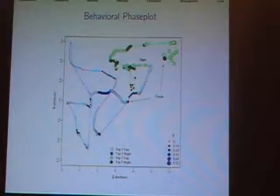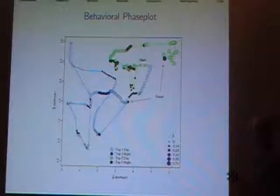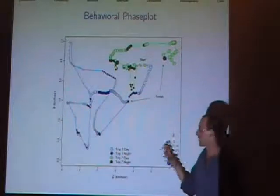So just a couple more points. There are models out there that have correlated random walks switching between one kind of behavior and another kind of behavior—traveling and foraging—and some probabilities of that transition. And so this is a phase plot of behaviors.